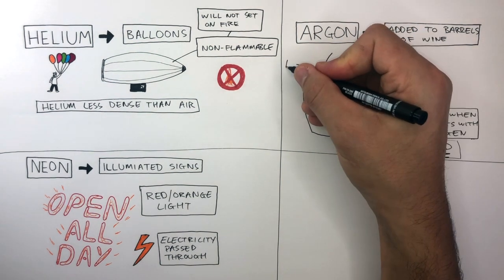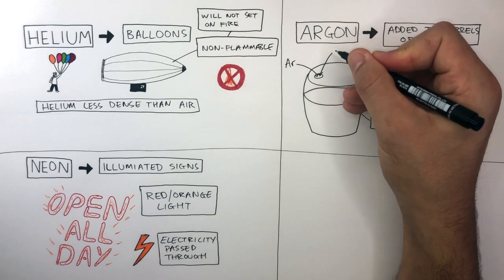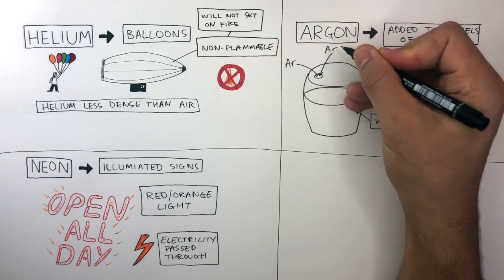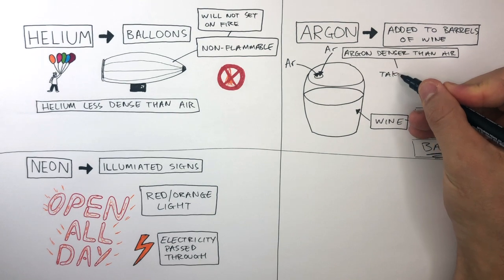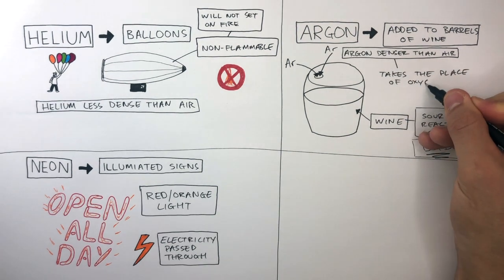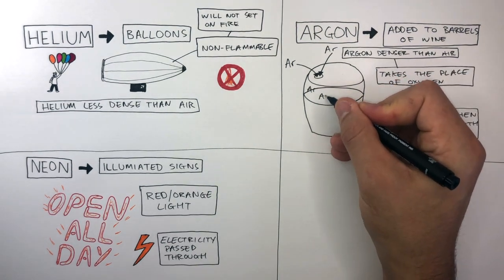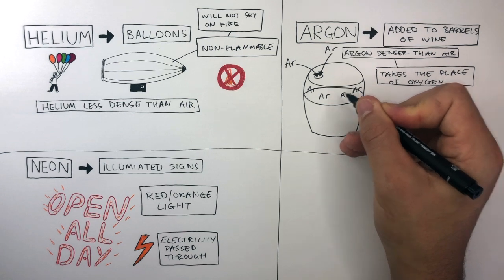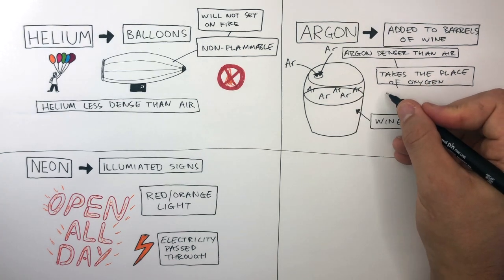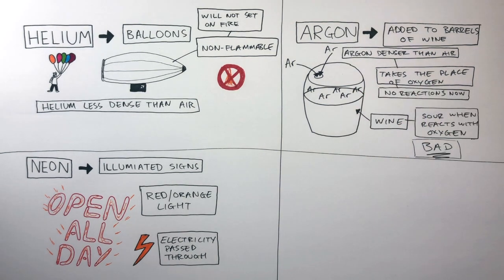Therefore, argon is put into the top of the barrel. This is because argon is denser than air, so it takes the place of the oxygen. The argon forces the air out which contains the oxygen, and this means no more reactions will now take place, as the argon is unreactive, so will not react with the wine.